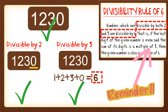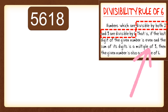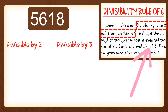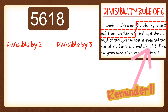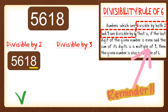Let's try another example. I have here 5,618. We're going to check if it is divisible by both 2 and 3. First, let's apply the divisibility rule for 2. For 5,618, the last digit should be an even number. The last digit is 8, and 8 is an even number because it ends with 0, 2, 4, 6, or 8. So 5,618 is divisible by 2.